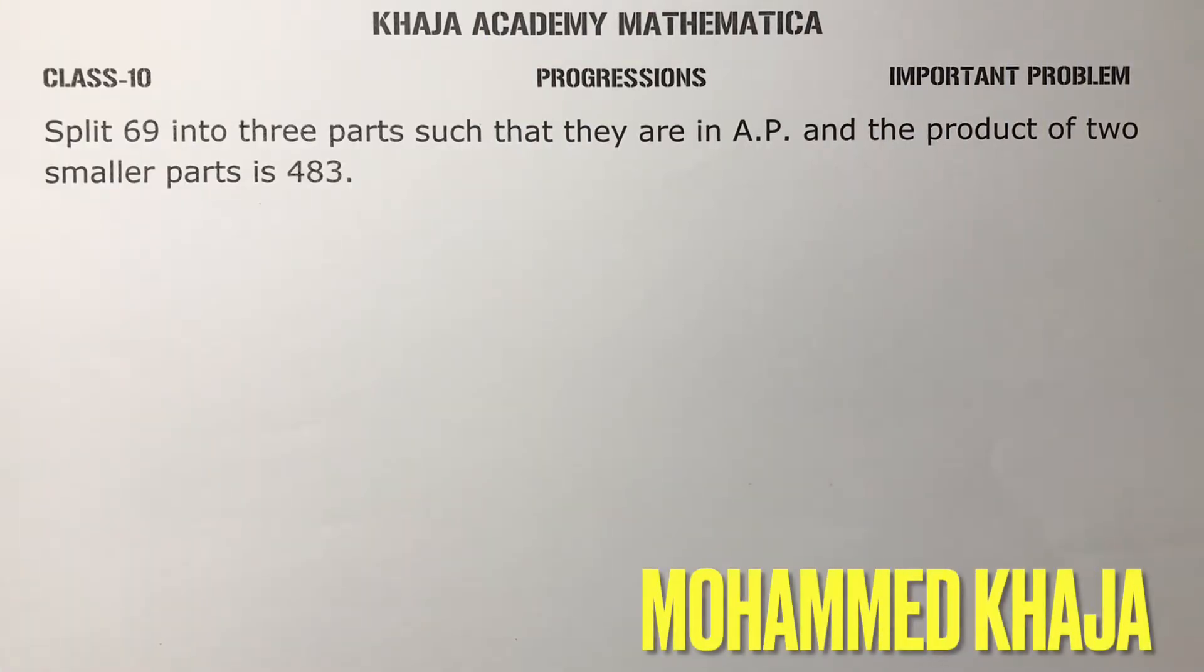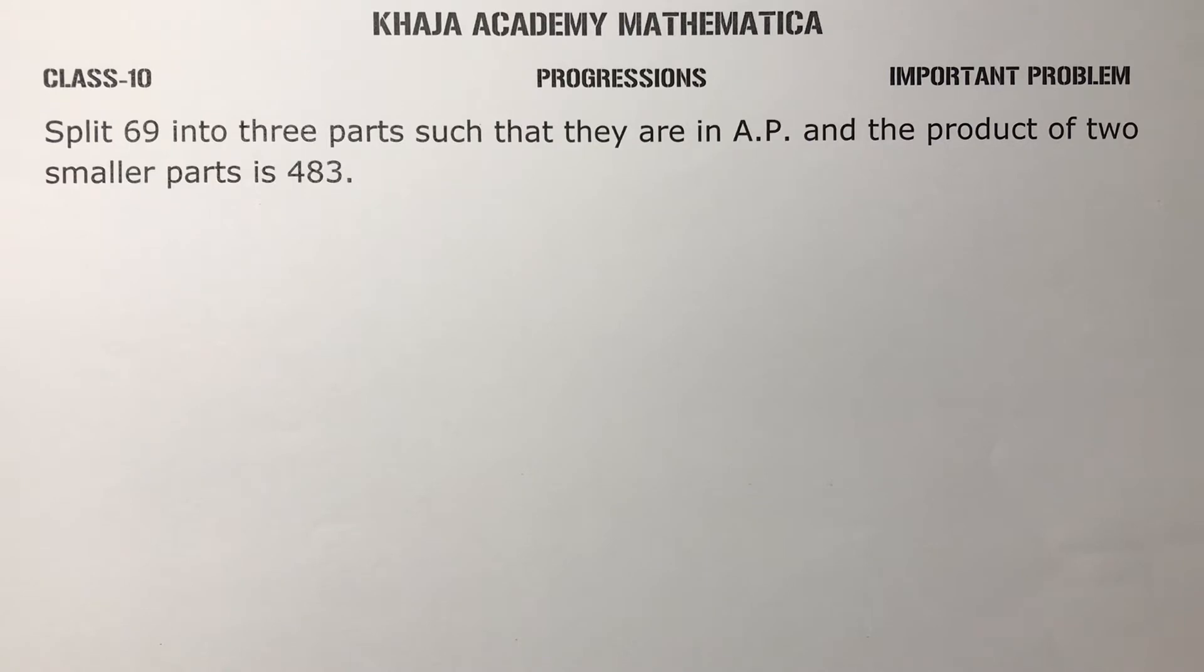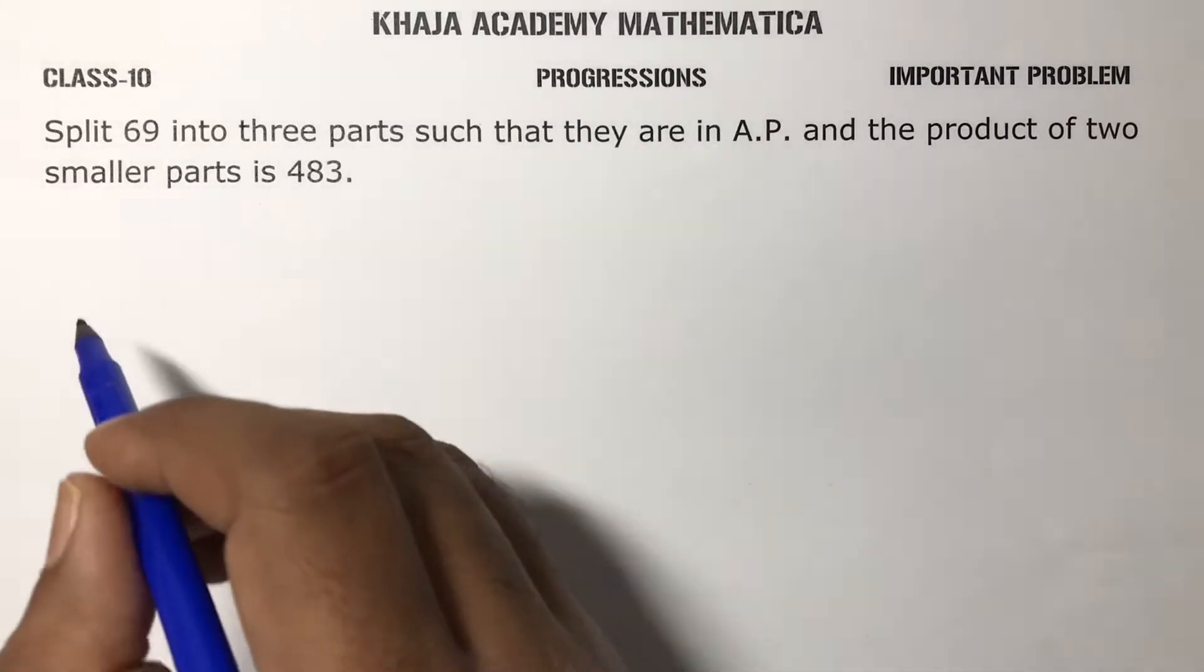Split 69 into three parts such that they are in AP and the product of the two smaller parts is 483. So see, in an AP, if the problem is based on three parts or three terms, take the three terms as like a minus d, a, and a plus d.